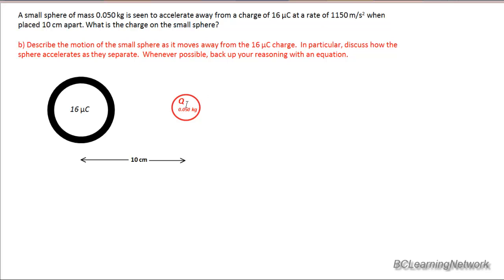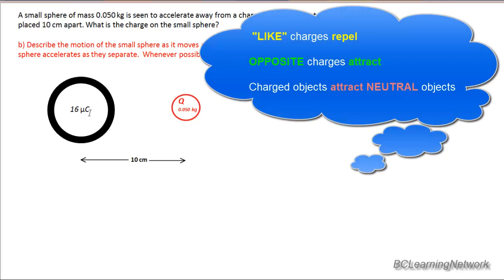When this smaller one is released, it accelerates away, so it's being repelled from the larger sphere at a rate of 1,150 meters per second squared. Now right away if it's repelled, we know that the sign of this charge must be the same as the sign of this charge because like charges repel. So if this thing has a positive charge of 16 microcoulombs, Q will also have to be a positive charge as it accelerates away to the right. And we saw that in part A.